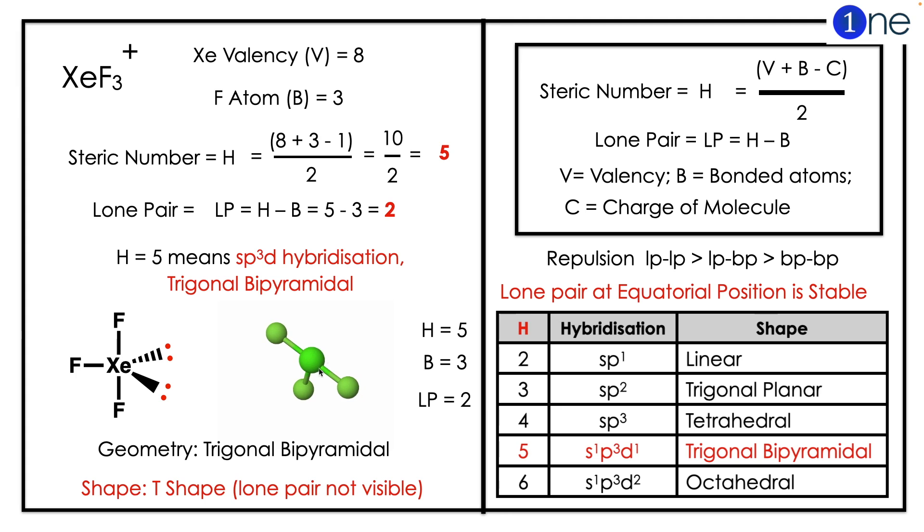To find the shape, you should know the steric number. The formula is H = (V + B - C) / 2.